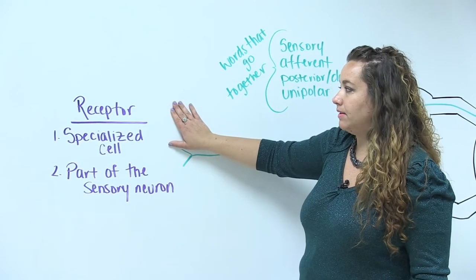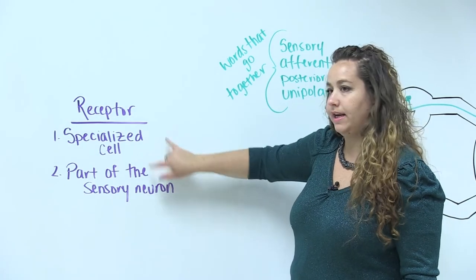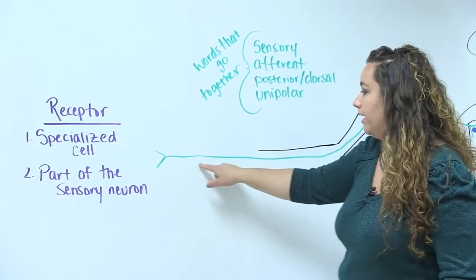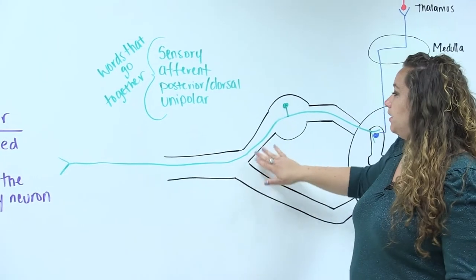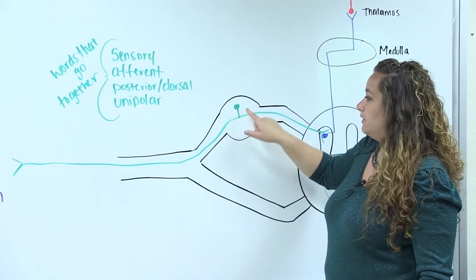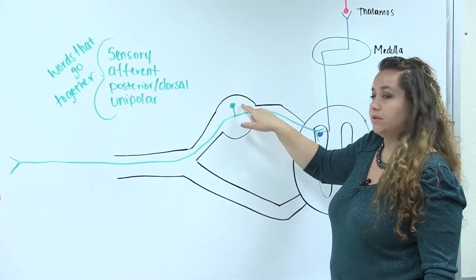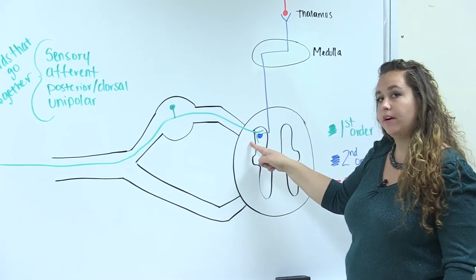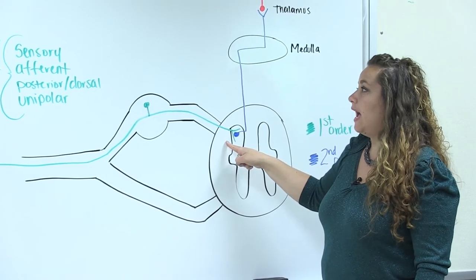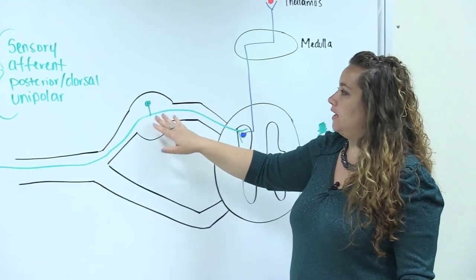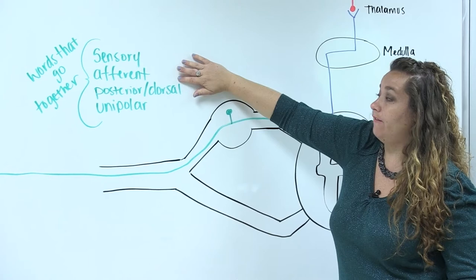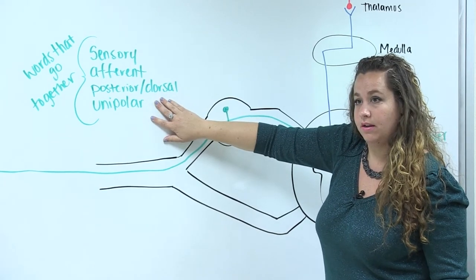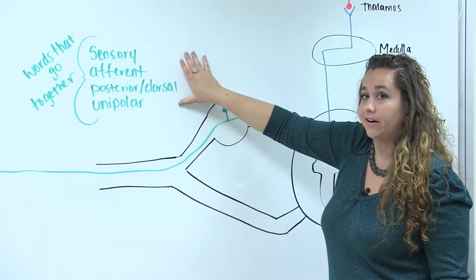Once you stimulate that receptor with a stimulus, regardless of what variety it is, that information will then be passed on to your sensory neuron. That sensory neuron, shown in green, travels up through the spinal nerve into the posterior root. The cell body or soma for that neuron is located in the dorsal root ganglion. The neuron continues to synapse in the posterior gray horn of the spinal cord. Sensory information travels up the afferent pathway through the posterior dorsal root via a unipolar neuron — these words all go together in reference to general senses.